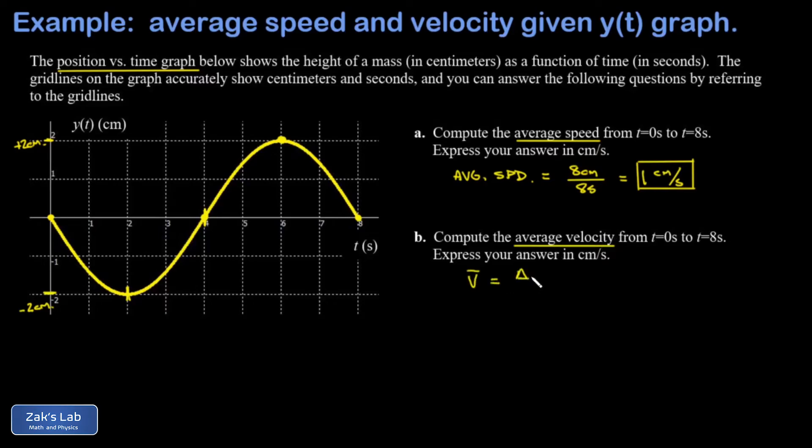So my average velocity is going to be delta x, or in this case delta y, divided by delta t—that's how long it took. And so if I look at my final y value, just to really highlight what's going on here: final y value minus initial y value over final time minus initial time.